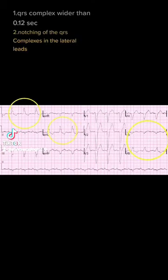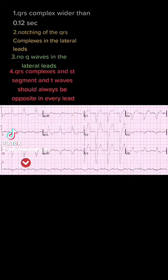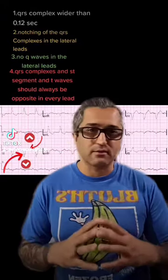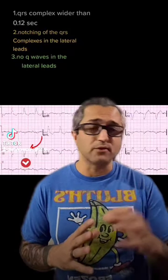Additional features include notching of the QRS complexes in the lateral leads, as well as the absence of septal Q waves in the lateral leads. Also, the QRS axis and the T wave and ST segment axis should always be opposite of each other. Anything outside of this is Sgarbossa's — meaning an abnormal left bundle branch block.